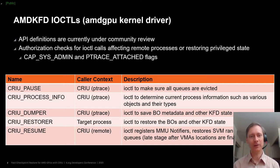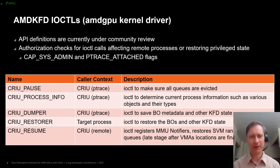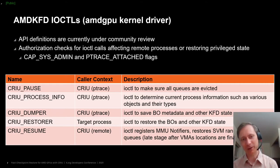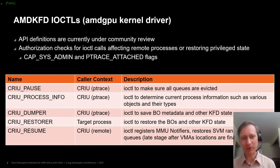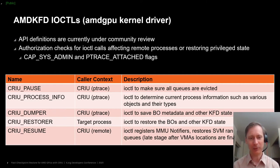We have a number of IOCTLs in the kernel mode driver to support the checkpoint and restore process with CRIU. These APIs are currently under review on the AMD GFX and DRI DEVEL mailing lists. All of these APIs have some security considerations, covered in a separate slide. They're called from different contexts: some are called from a remote CRIU process and need to access state of a remote target process — depending on a ptrace attachment to allow access. Then we have the restore API that runs in the context of the target process itself, and the resume API that runs in a remote process controlling the resuming of execution of child processes that have already restored themselves.